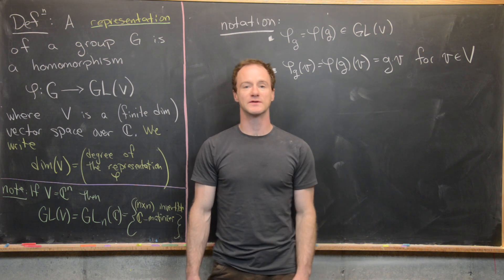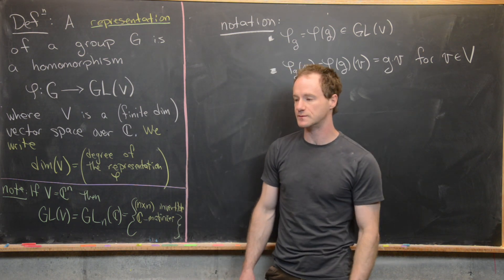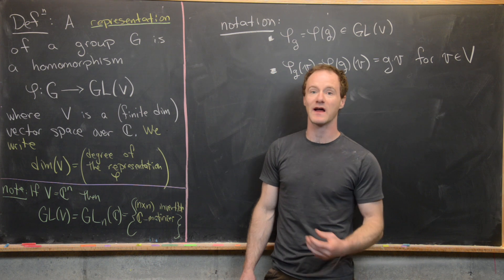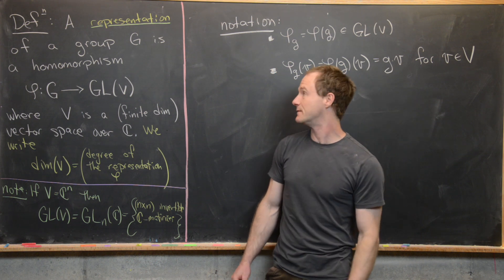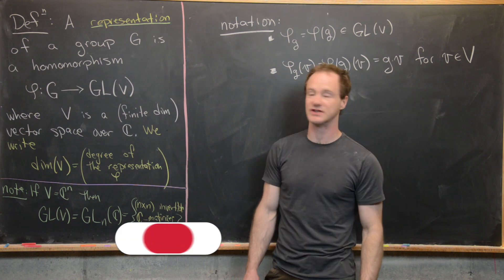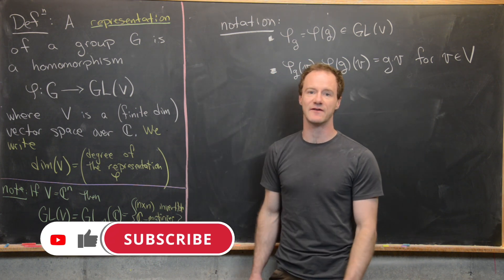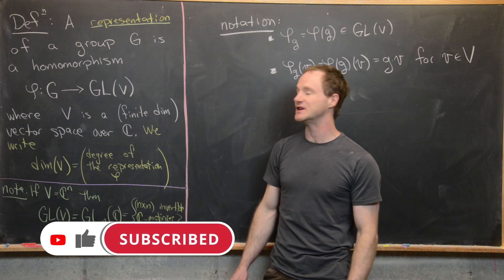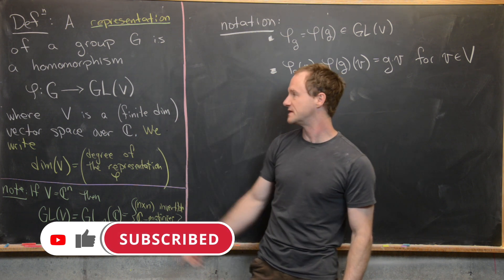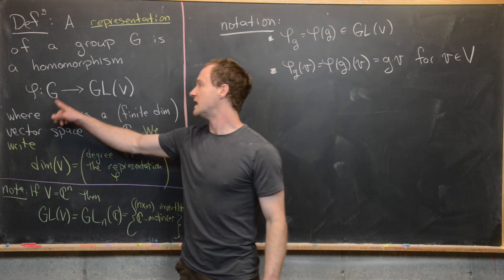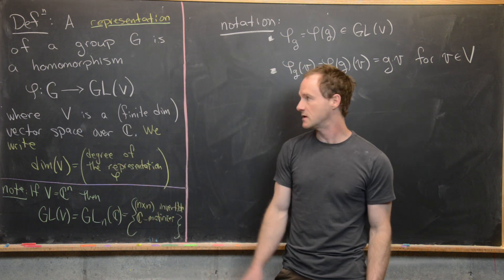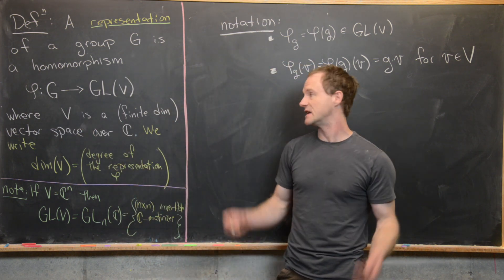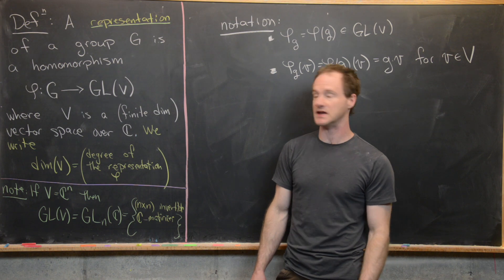We're going to begin looking at representations of groups — specifically, complex finite-dimensional representations. A representation of a group G is a homomorphism phi from G to GL(V), where V is a finite-dimensional vector space over C.